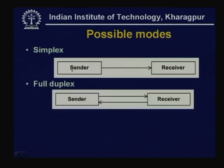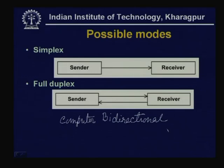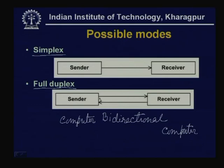Simplex mode cannot always be used; in some situations data has to flow in both directions, which is known as bidirectional or full duplex. For example, when two computers are communicating with each other, data transfer will naturally be in both directions — this is known as full duplex. For full duplex communication, two pairs of wires are required because it allows simultaneous communication in both directions.